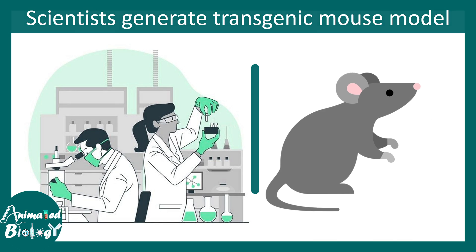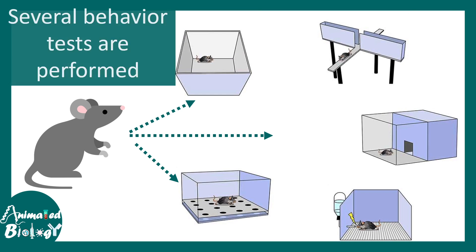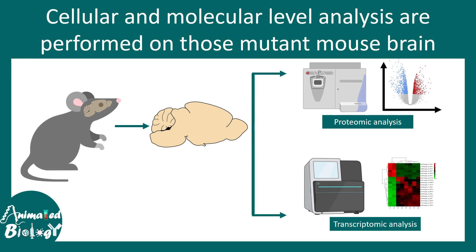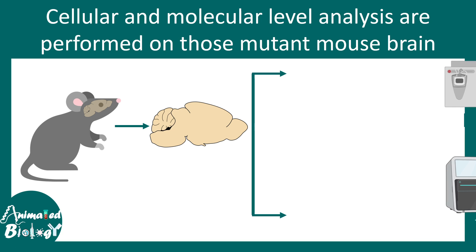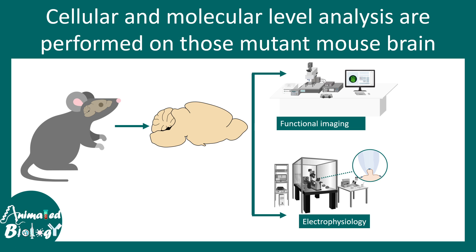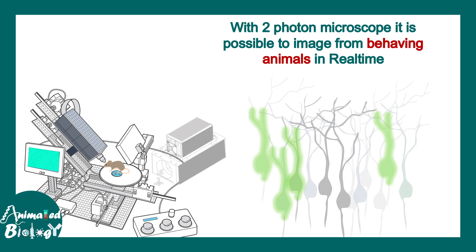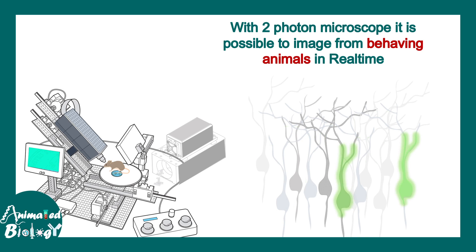One approach is to generate transgenic mouse models, which are subjected to several behavioral test analyses. These mouse models often show autistic-like behaviors. Once behavioral paradigms are established, their brains are used to understand changes at the protein or transcript level using proteomic and transcriptomic analysis. Functional assays like functional imaging, calcium imaging, and electrophysiology can also be performed to understand circuit functionality in autism spectrum mutant mice.